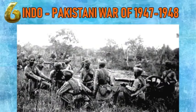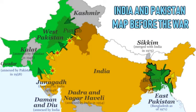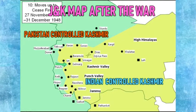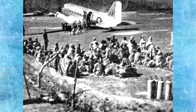The Indo-Pakistani War of 1947 to 1948 was fought between India and Pakistan over the princely state of Jammu and Kashmir. The result of the war was inconclusive; however, most neutral assessments agree that India was the victor, as it was able to successfully defend about two-thirds of Kashmir, including the Kashmir Valley, Jammu, and Ladakh.